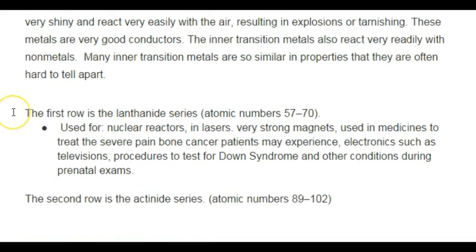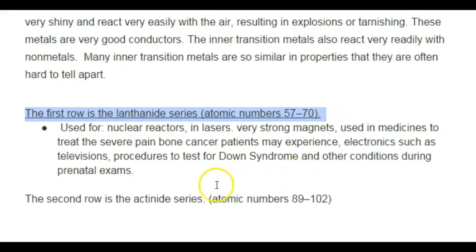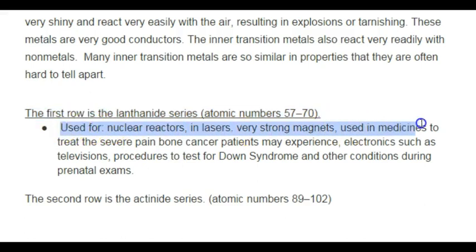There are two different rows. The first row is the lanthanide series. It's used for nuclear reactors, lasers, and very strong magnets. It's used in medicines to treat the severe bone pain that cancer patients may experience. It's also used in electronics such as your TV, and in procedures to test for Down syndrome and other conditions during prenatal exams. There are a lot of different uses.